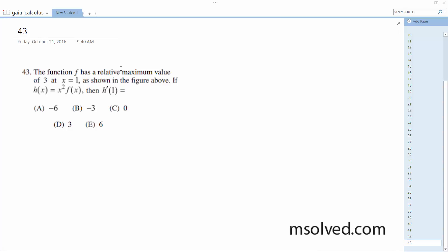Function f has a relative maximum value of 3 at x equals 1, as shown in the figure above, or in this figure here.